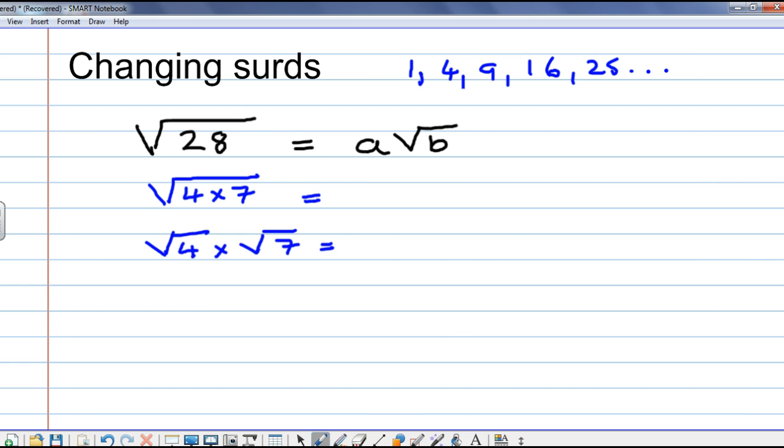That's a square number. So, I write that as 2. The square root of 4 is 2 times the root of 7. And it's 2 root 7. So, in this instance, a is 2, and b is 7. Let's go through that once more.